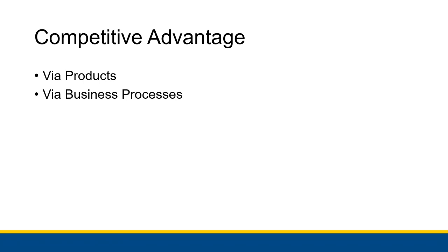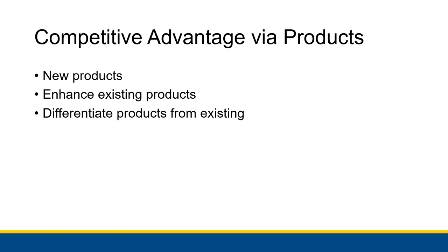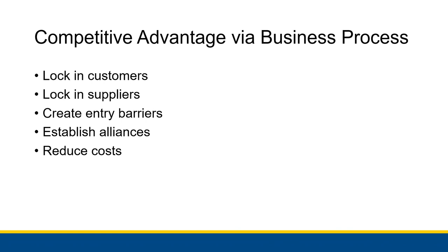In our businesses we want to generate a competitive advantage — making our products or services stand out above competitors so we have a consistent consumer base. There are two ways to create a competitive advantage: through your products and through your business processes. We're going to look at how information systems can help us attain competitive advantage in both ways. Porter identified five different ways to gain a competitive advantage through business processes.